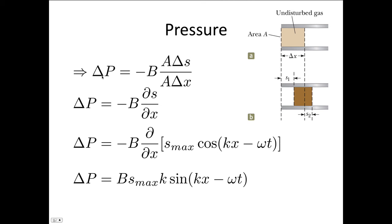Now we're just going to substitute in. Delta P is equal to minus B, and we said it was delta V over VI. Delta V is A delta S, and V is A delta X. So now the A's will cancel out.